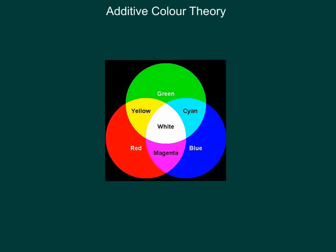Here you can see an image that depicts the additive color theory. In the middle you can see white, and on the outside you see the different primary colors: red, green, and blue. When you combine these three colors, you get white — that's why white is in the middle. This is a Venn diagram. This circle represents green, this circle is blue, and this circle is red. The part in the middle is what happens when you combine all three.